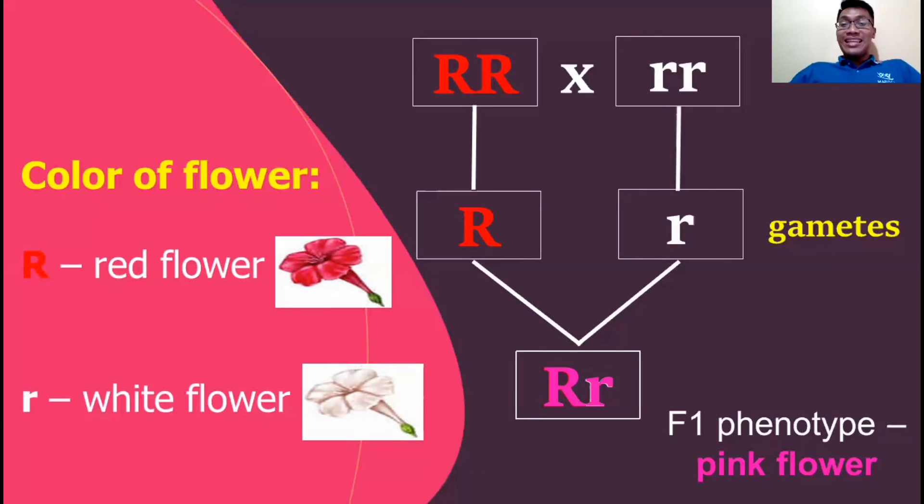Again, in incomplete dominance we will form the third trait which is intermediate between the dominant and recessive trait. In this case, the intermediate third trait would be pink flower. So what does this mean? It means that every time the plant with red flower and the plant with the white flower either breed or cross, they will always produce pink flowers or a plant producing pink flower.